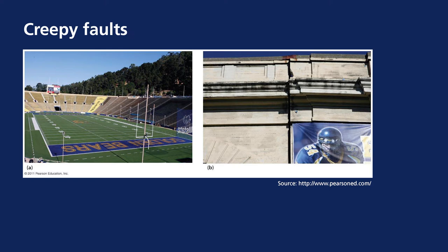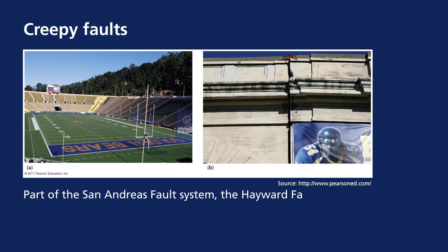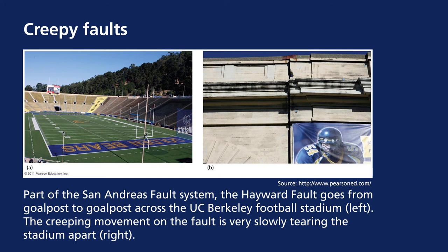Creep faults are very slow-moving faults. The football stadium at UC Berkeley in San Francisco is a good example, as the fault runs directly through the stadium, which will eventually probably tear the stadium apart.